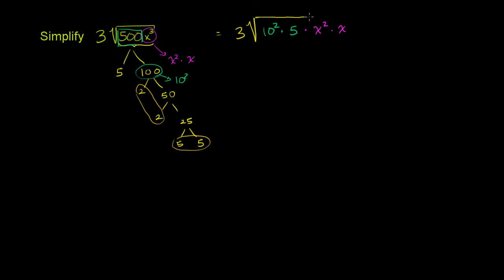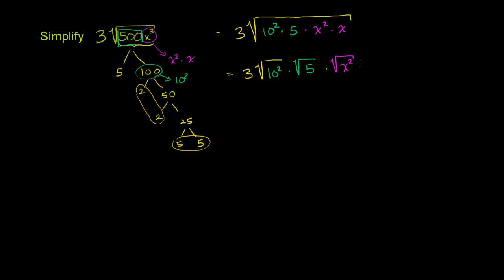Let me extend my principal root sign here. We know from basic exponent properties — taking the square root of something is really the same thing as taking it to a fractional exponent, so the same properties apply. This is the same thing as 3 times the principal root of 10 squared, times the principal root of 5, times the principal root of x squared, times the principal root of x.